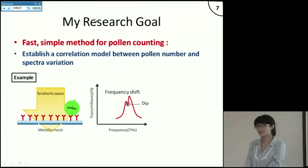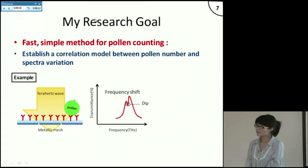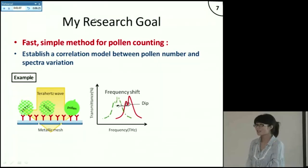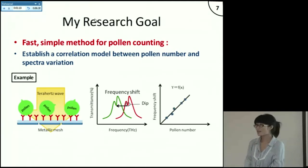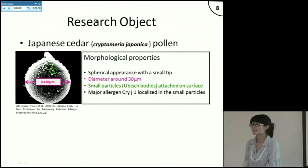Moreover, terahertz wavelengths are comparable to the pollen size, so pollen number change might be reflected by spectral variation — for example, the transmittance of a metallic mesh, which is characterized by its dip configuration. The dip frequency is very sensitive to the refractive index of material on the metallic mesh surface. So in an ideal situation, before and after different quantities of pollen are added to the metallic mesh, a corresponding dip frequency shift should be observed. Based on a correlation model between pollen number and frequency shift, a fast and simple pollen counting process should be realized. Based on this hypothesis, I chose Japanese cedar pollen as my research object.